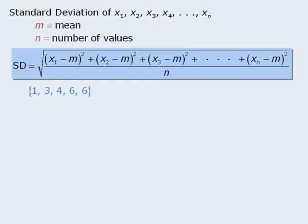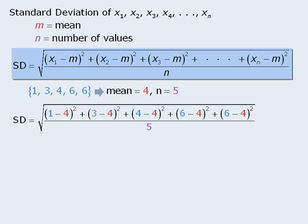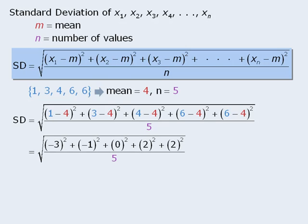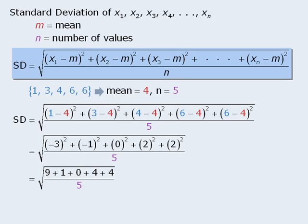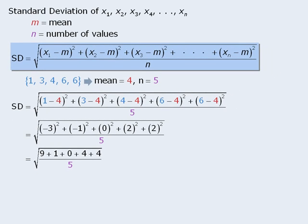Let's use this formula to find the standard deviation of this set of numbers. We will first calculate the mean, which is 4, and we can see that n, the number of values in the set, is equal to 5. When we plug these values into the formula, we get the following. From here we can simplify the information in the brackets, and then we'll square each of these values. This simplifies to be the square root of 3.6, which equals approximately 1.9.